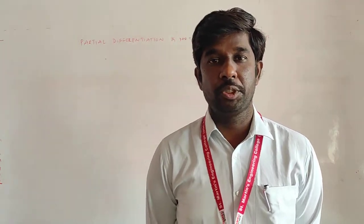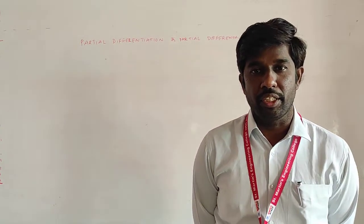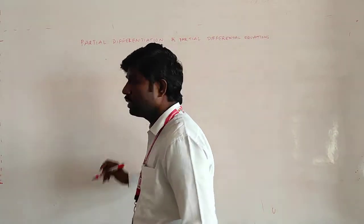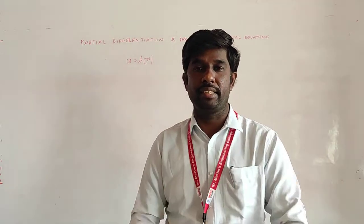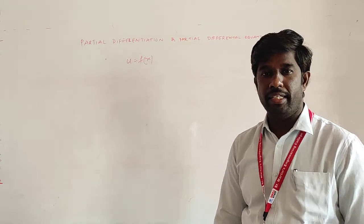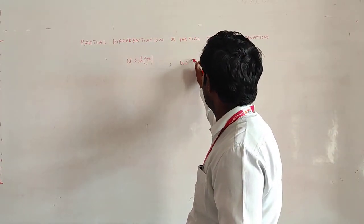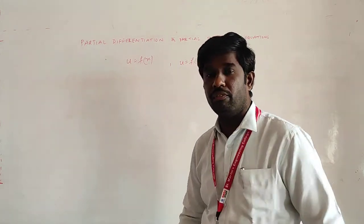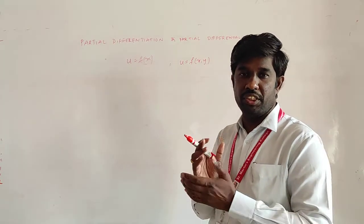So what is this partial differentiation? If u is a function of a single variable x, then x is the independent variable. If we see another function u = f(x, y), then u is a function of two variables x and y — this is the case of partial differentiation.